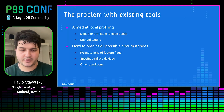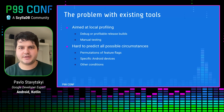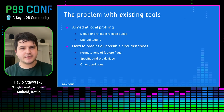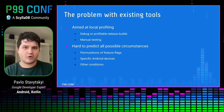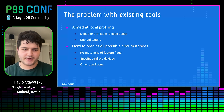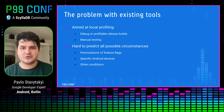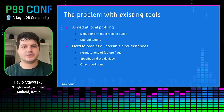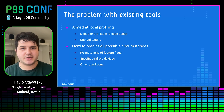The problem with this approach is that it is hard to predict all possible circumstances of how the application will be used when you're just trying to test it manually. Even if you have a great QA team, you need to do it consistently with every new release. There are a lot of factors that make it harder — if your product relies heavily on feature flags, you will have a bunch of permutations that lead to so many use cases. Also, you have different types of Android devices in production and other unknown conditions. So it's good to cover everything in production, tracking all possible scenarios across a big user base.